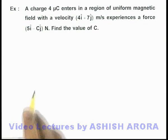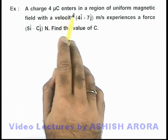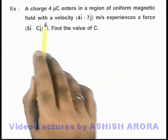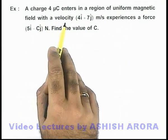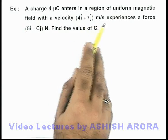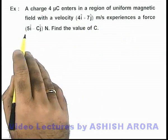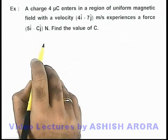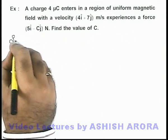In this example, we are given that a charge of 4 microcoulombs enters a region of uniform magnetic field with a velocity (4i + 7j) m/s, and it experiences a force of (5i - cj) N. We are required to find the value of c.